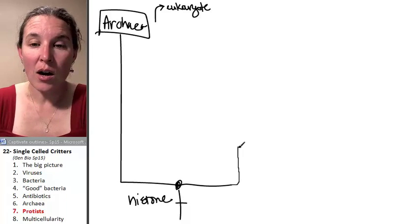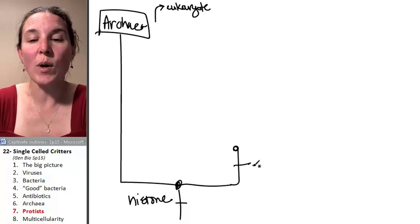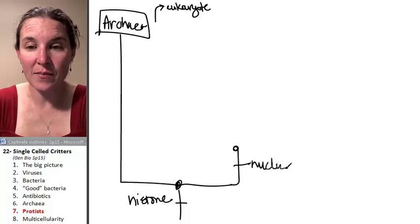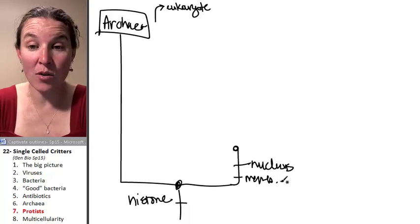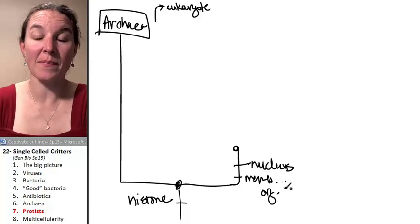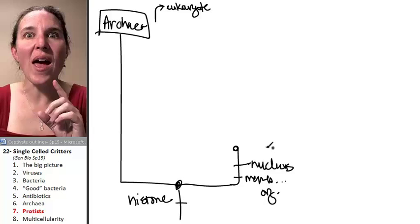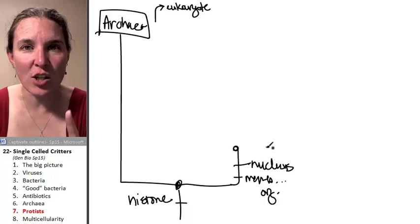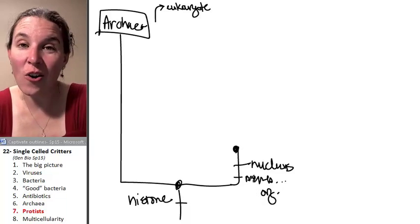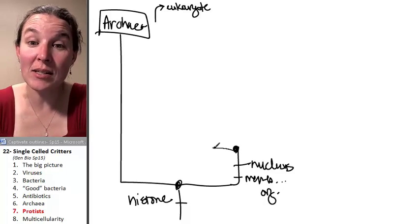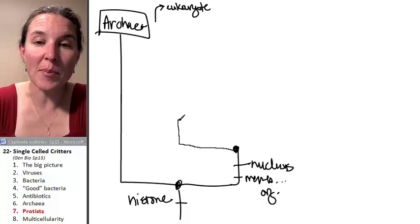So at this stage we get a nucleus and we get the membrane-bound organelles. And now everything beyond here is a eukaryote. And here's a common ancestor of all eukaryotes. Probably was single-celled. Now look what happens. We get a branch.